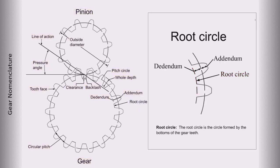Root circle. The root circle is the circle formed by the bottoms of the gear teeth.